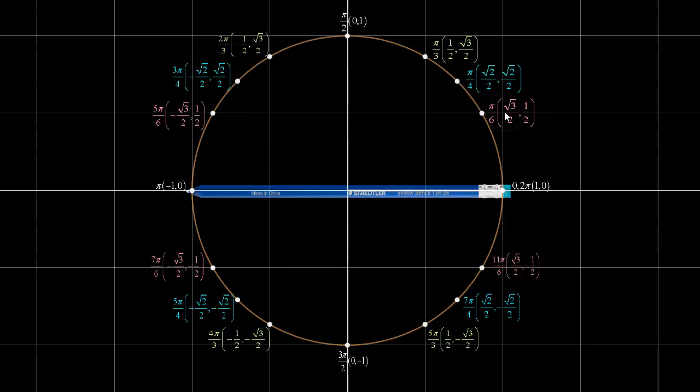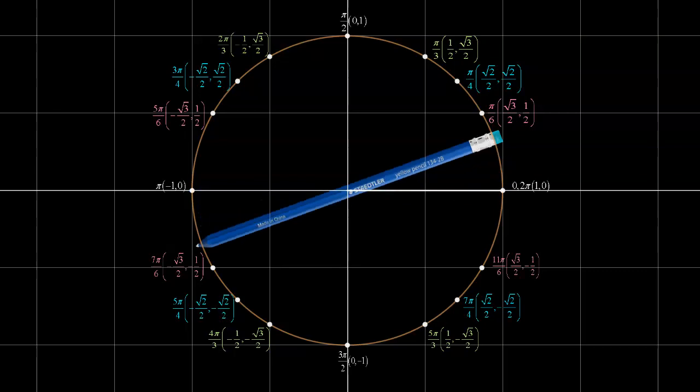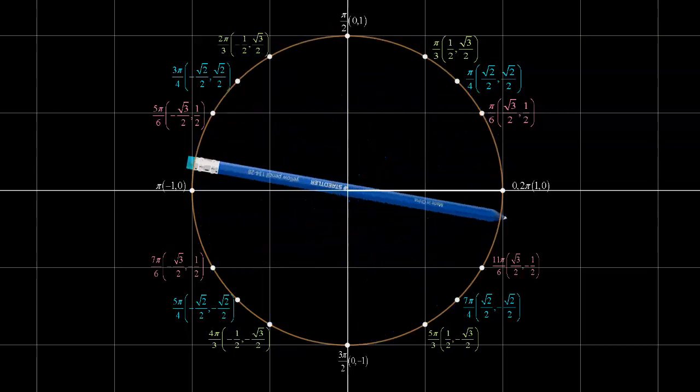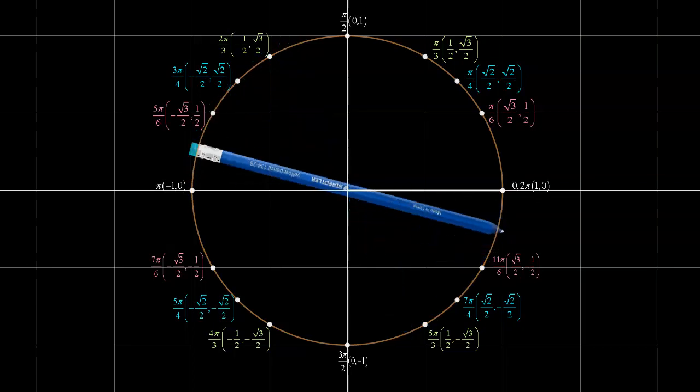Something that can help me in this is knowing that CAST rule tells me that tan is negative in quadrants 2 and 4. So if I were to rotate this, tan would be negative root 3 somewhere in these two quadrants.